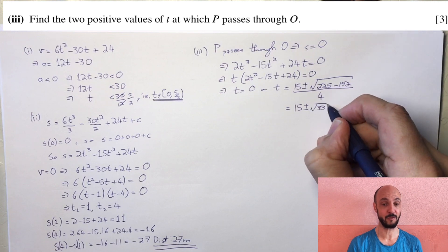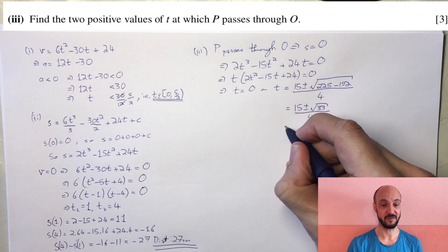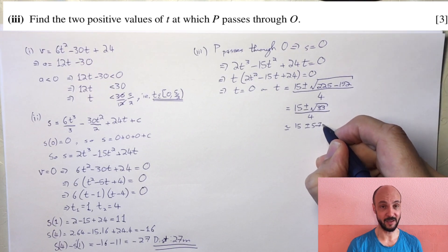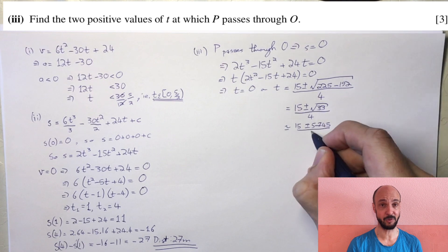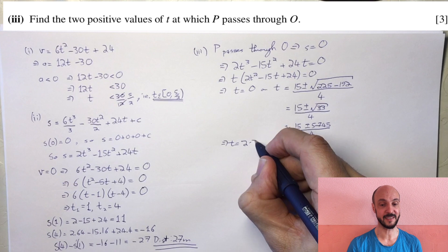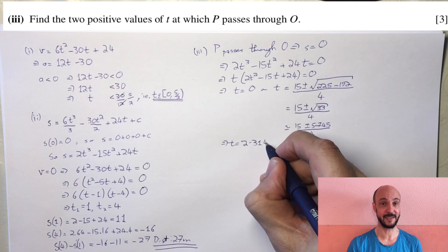This gives 2.314 and 5.186, and using the Cambridge convention to three significant figures we get t equals 2.31 seconds or 5.19 seconds.